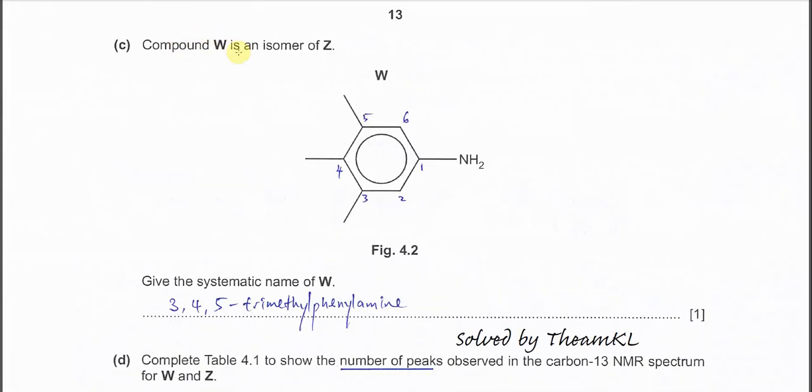Part C: Compound W is an isomer of Z. First, you need to know the main structure. In this compound, the main structure is phenylamine. This is the major name. In this phenylamine, the first carbon is the one that bonds to the amine. So this is first, second, third - so it's 3, 4, 5. At the 3, 4, 5 positions, it has one methyl group each. Therefore, we name it 3,4,5-trimethylphenylamine.